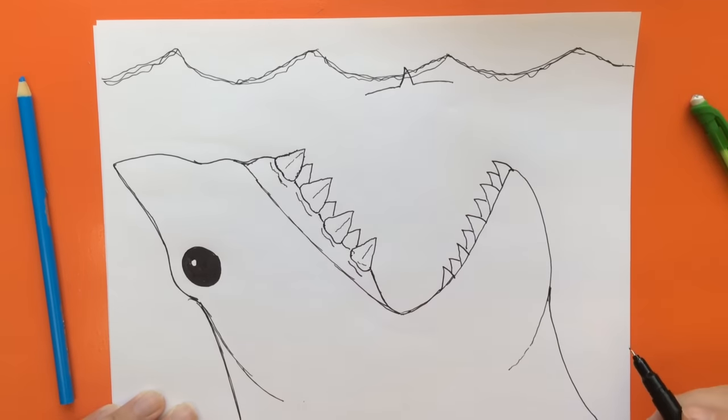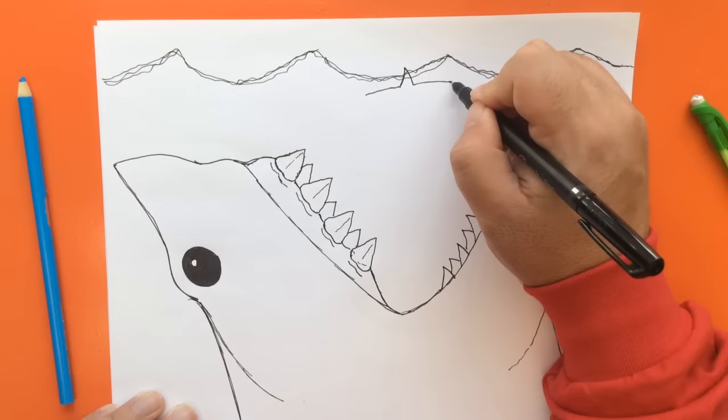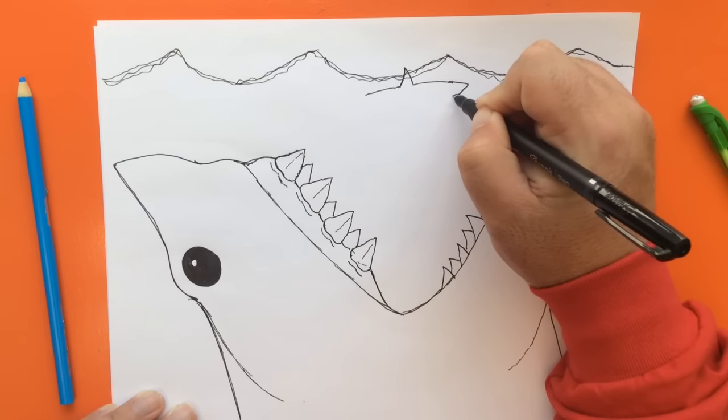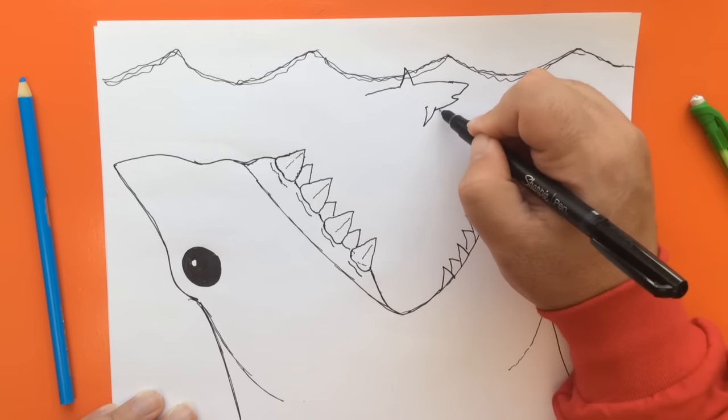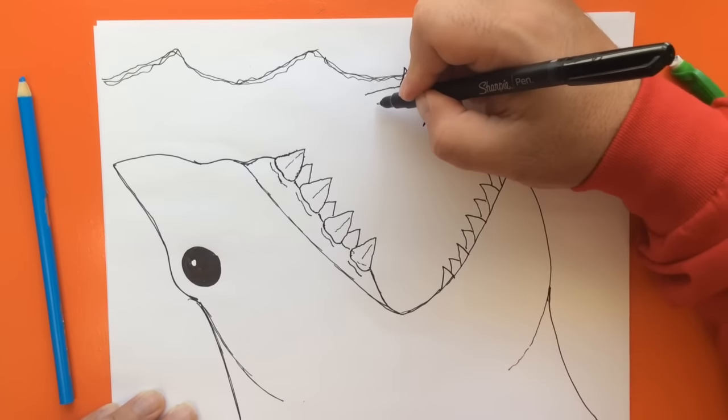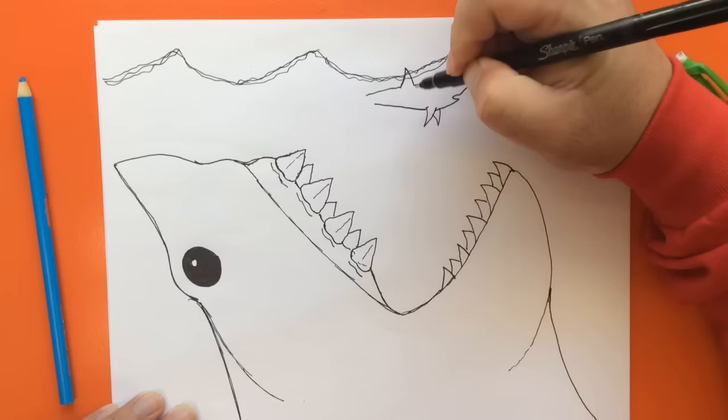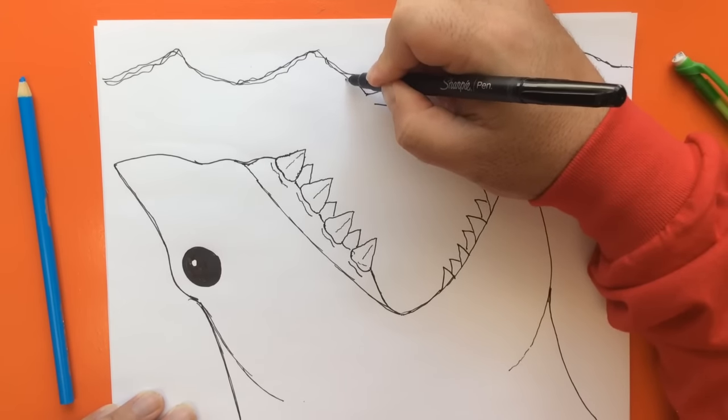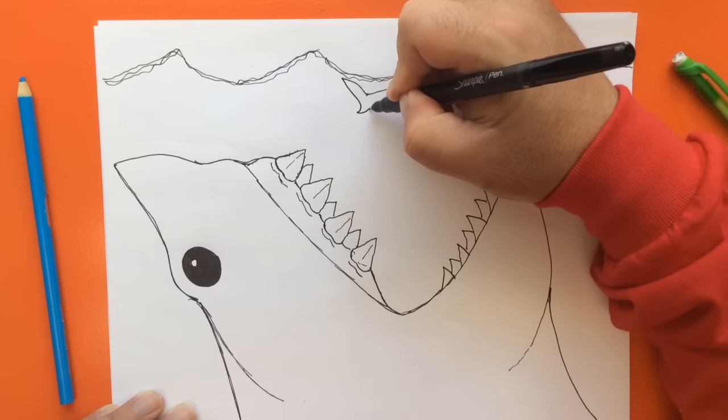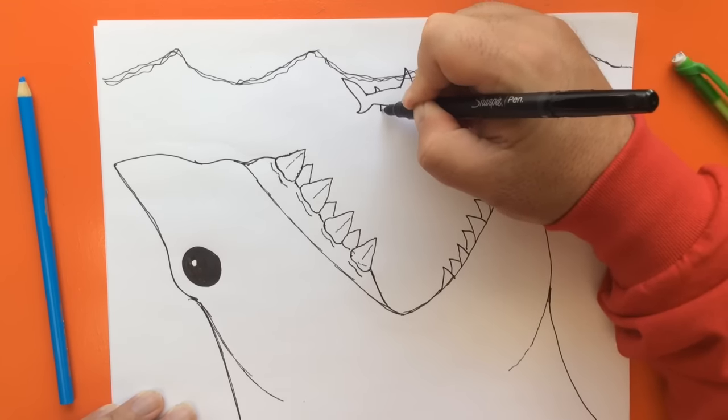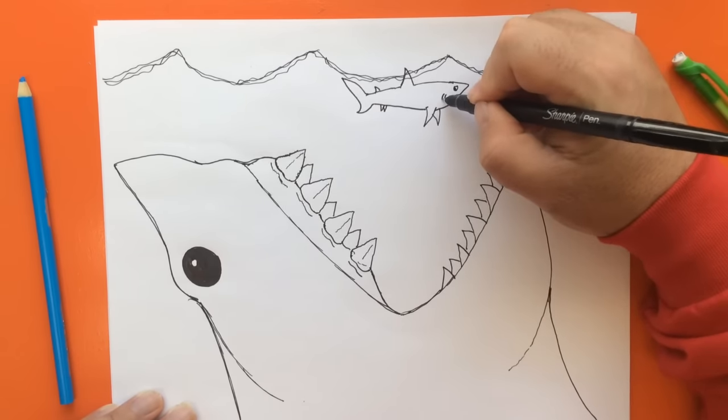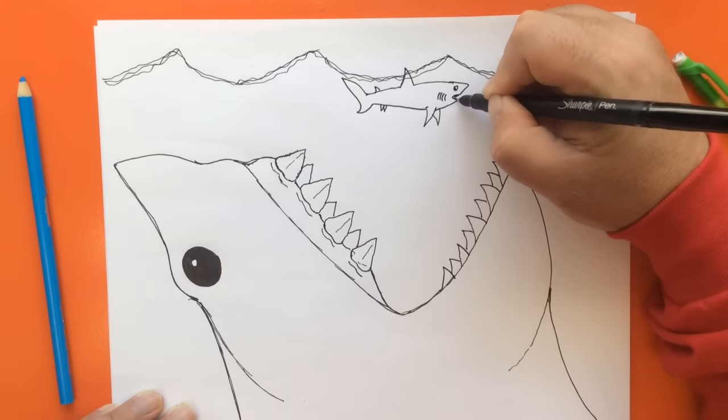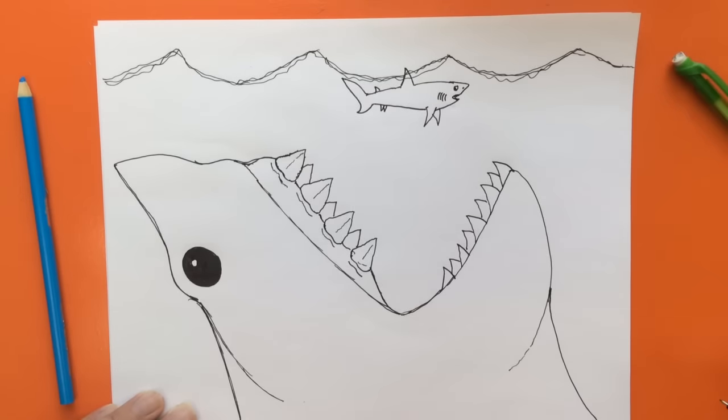Put two lines in either direction like this. The snout and the head. Pectoral fins. Belly and the tail. Maybe a few extra fins here. Eye and gills. Then add some teeth. Nostril. And that's our smaller shark, about to become a meal.